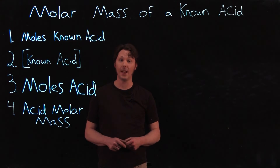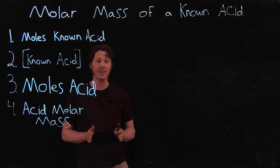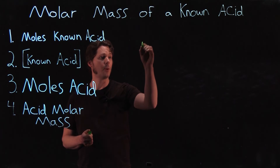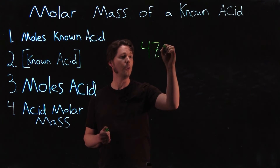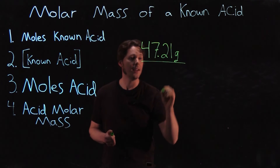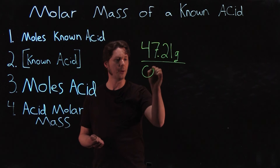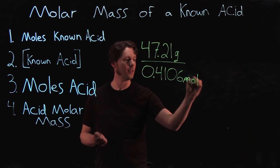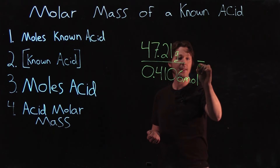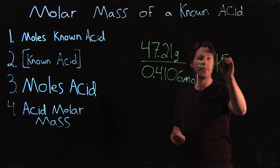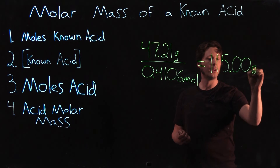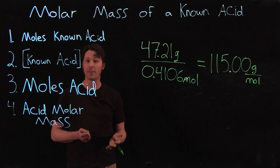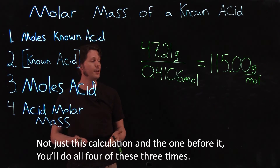Finally, we take the grams of known acid used to make the solution — from your weigh bottle mass data — and divide by the total moles just calculated to get the molar mass. If you used 47.21 grams of known acid divided by 0.4106 moles, that gives us a molar mass of 115.00 grams per mole. You'll do this last calculation three times using data from your three good titrations to generate three molar mass values.